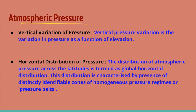Atmospheric pressure is the weight of a column of air contained in a unit area from the mean sea level to the top of the atmosphere. It is expressed in units of millibars (mb) and pascals. Due to gravity, air at the surface is denser and has higher pressure. Atmospheric pressure is measured with a mercury barometer, and it decreases with height.